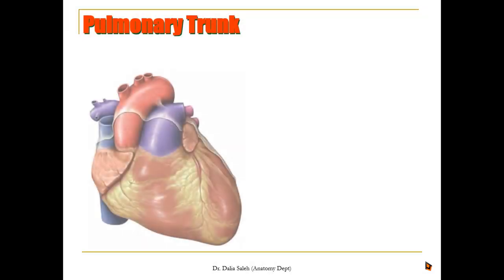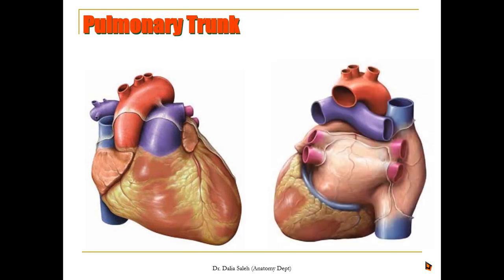Looking at the roots of the pulmonary trunk, in the anterior view the pulmonary trunk arises from the right ventricle, lies to the left of the ascending aorta, then moves backwards to split into the right and left pulmonary arteries. The right pulmonary artery passes posterior to the ascending aorta and superior vena cava, and superior to the left atrium and right superior pulmonary vein. The root of the aorta arises from the left ventricle, covered at its beginning by the right auricle, lies to the right of the pulmonary trunk, and then arches superiorly to form the arch of the aorta.